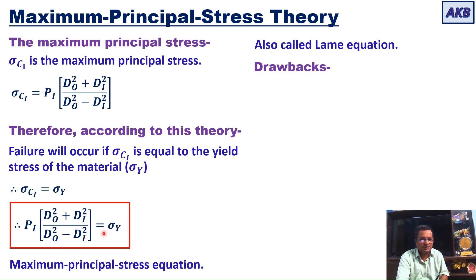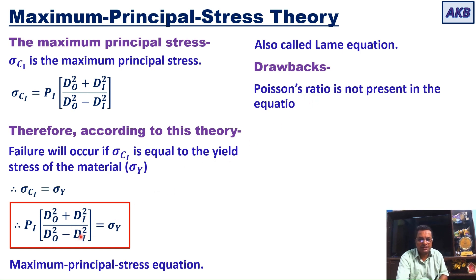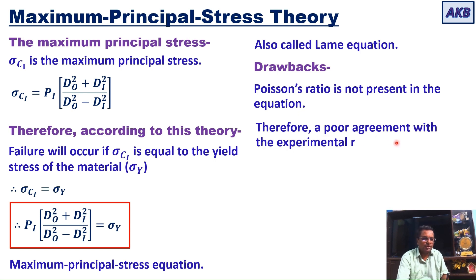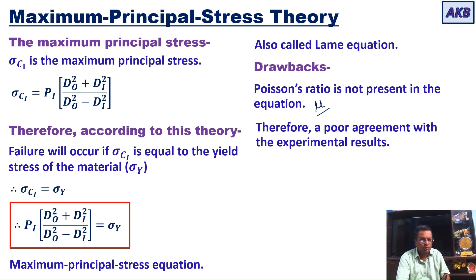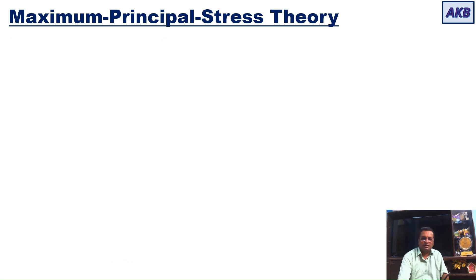This particular equation is called the maximum principal stress equation, also called the Damme equation. A drawback of this equation is that Poisson's ratio — mu — is not present in the equation. Due to this absence of mu, there is poor agreement with experimental results.